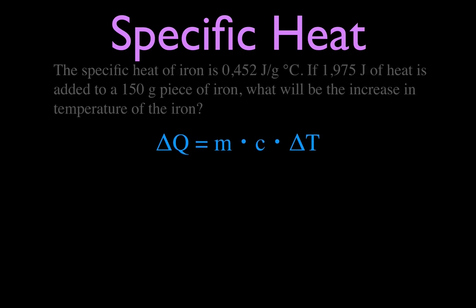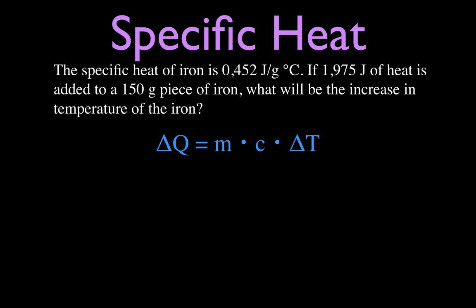Okay, let's make it a little bit more interesting. Now, the specific heat of iron is 0.452 joules per gram degree Celsius. And we're going to add 1,975 joules of heat to a 150 gram piece of iron. And we want to know what will be the change in the temperature of that iron.